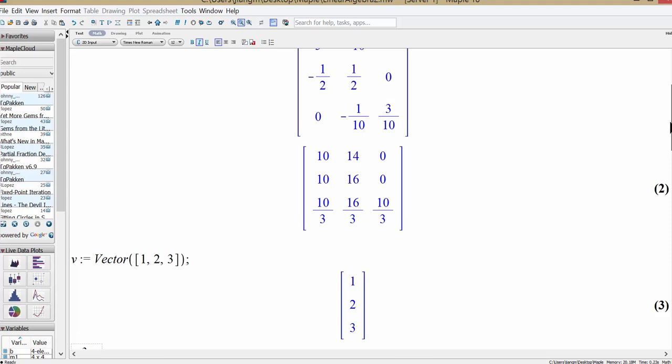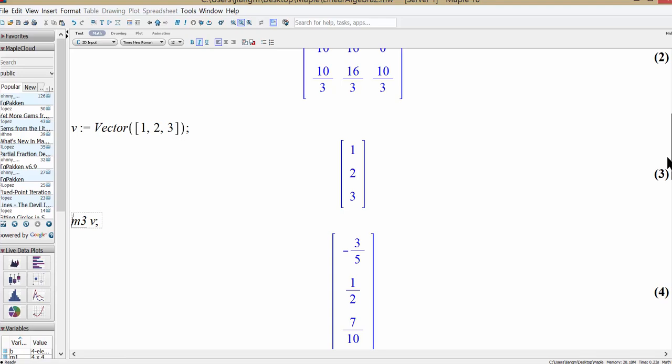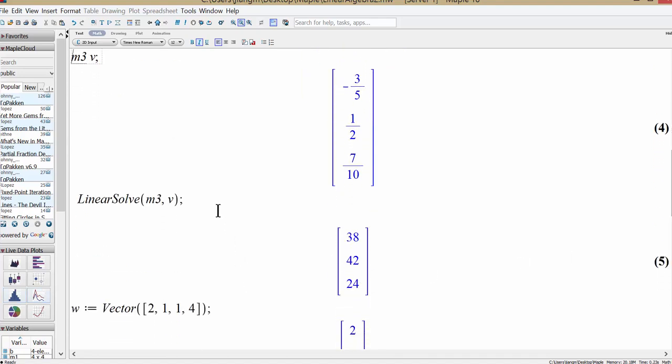Because we know the coefficient matrix is invertible, so we can actually have a unique solution for any vector v over here. And that's the solution we get after you solve it. You can see the solution is going to be 38, 42, and 24.